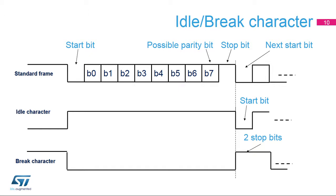This slide shows an example of 8-bit data frames configured with 1 stop bit. An idle character is interpreted as an entire frame of 1s; the number of 1s will include the number of stop bits. A break character is interpreted on receiving 0s for a frame period. At the end of the break frame, two stop bits are inserted.